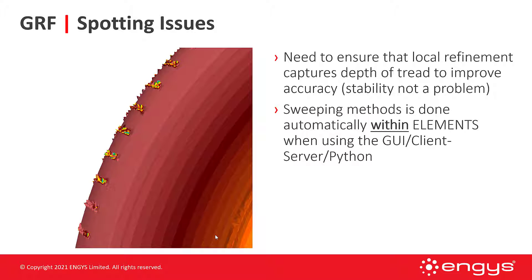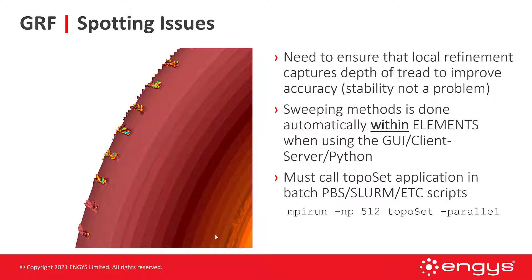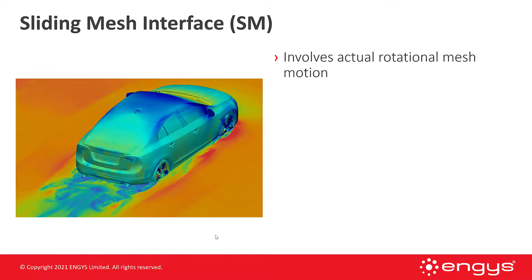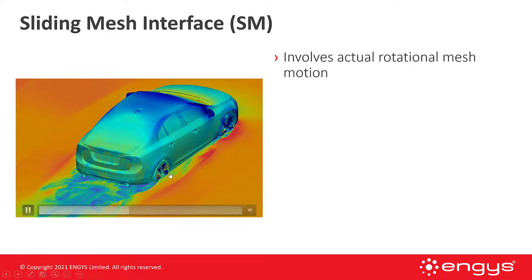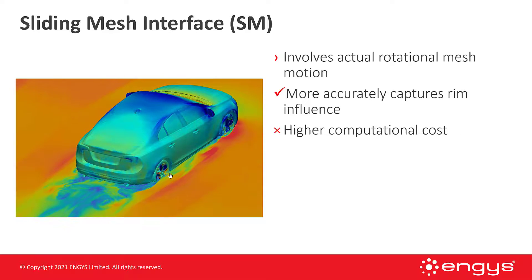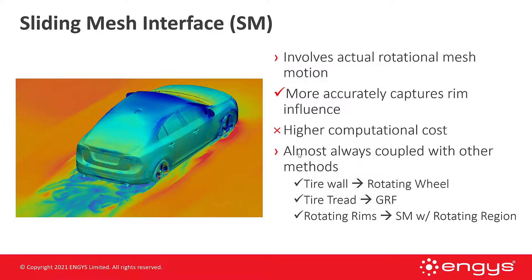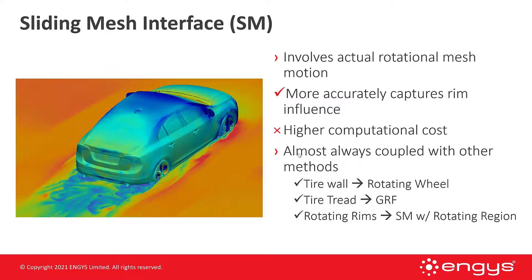The sweeping method is done automatically within Elements when using the GUI, client server, or Python. However, if you're using something like PBS or SLAM or another queuing system, you need to call topo set in parallel to launch the application to create the cell zone after the mesh has been created. For a sliding mesh interface, this involves actual rotation of the mesh — physically moving the mesh — where the other two methods don't move the mesh at all. It's more accurate because it captures the rim influence more accurately, but comes at a higher computational cost. Sliding mesh interfaces are almost always coupled with other methods: the tire wall uses a rotating wheel boundary condition, the tire tread uses GRF, and the rotating rims use a sliding mesh with a rotating region — all three coupled together for maximum accuracy.